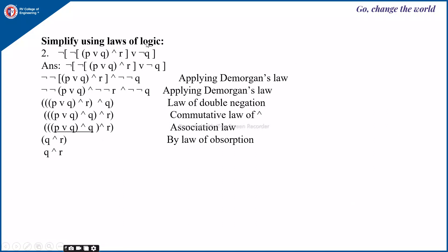For the second example, we will simplify using the laws of logic. The given expression is ¬(¬(P∨Q) ∧ R ∨ ¬Q). Again, please note there will be different ways of obtaining the simplified expression and the order of applying laws may change. One such approach is to apply De Morgan's law.